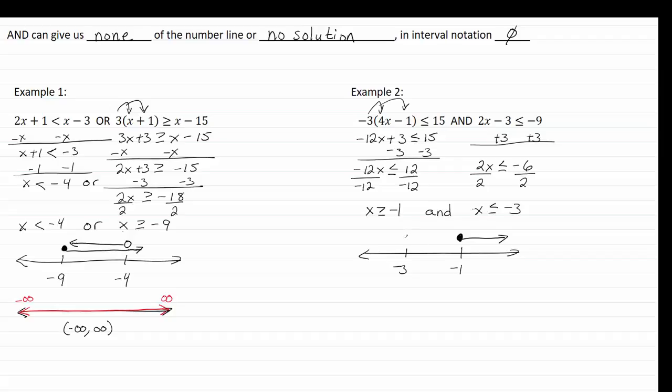And then we're going to have a closed dot at negative three. And x is less than or equal to three, so that's going to negative infinity.